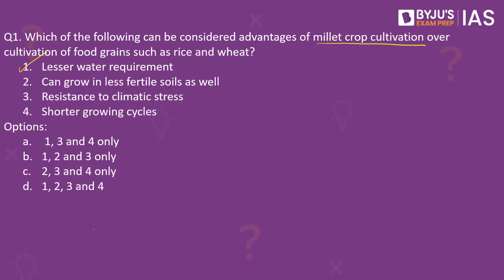The second statement is also correct — millets are hardy crops and can grow well even under marginal conditions of soil fertility. Unlike rice and wheat, which require many inputs in terms of fertilizer, millets can grow well even under less fertile conditions. One of the biggest advantages of millet crops is that they are climate-resilient, as they can grow well in dry zones as rain-fed crops and are tolerant to very high temperatures and very low soil humidity. Hence, they can be considered resistant to climatic stress.